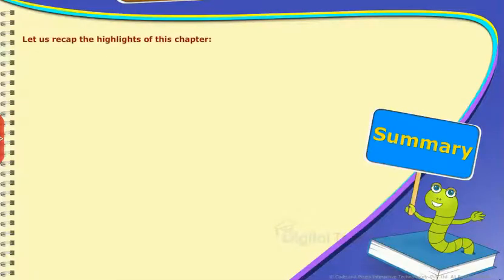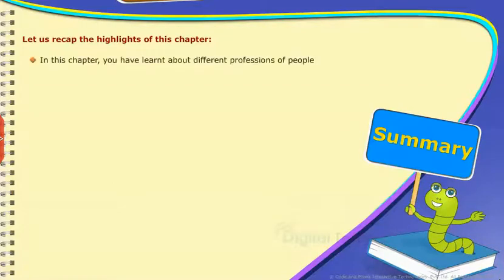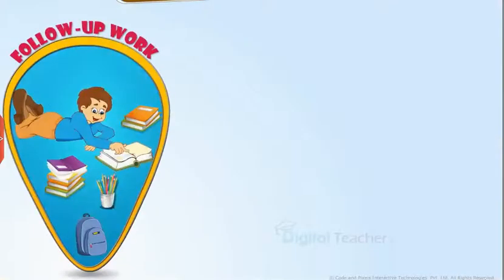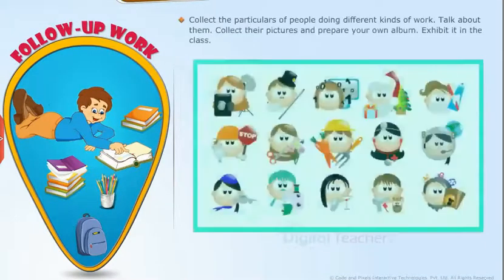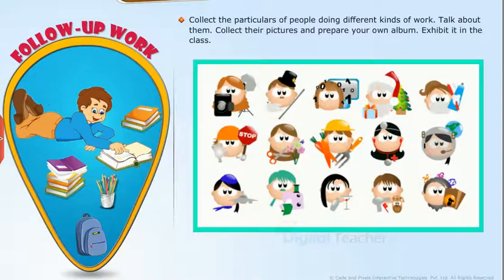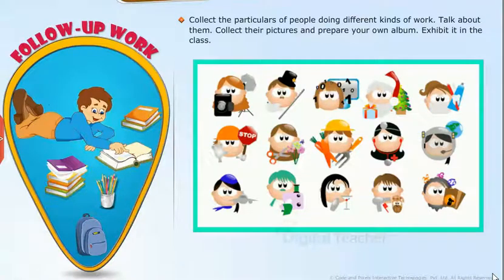Summary: Let us recap the highlights of this chapter. In this chapter, you have learnt about different professions of people. Follow-up work: Let's take up the following activities. Collect the particulars of people doing different kinds of work. Talk about them. Collect their pictures and prepare your own album. Exhibit it in the class.